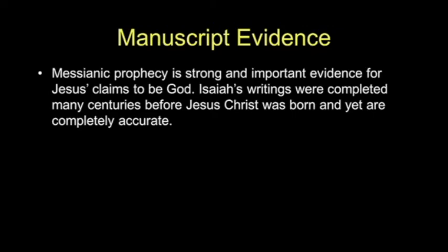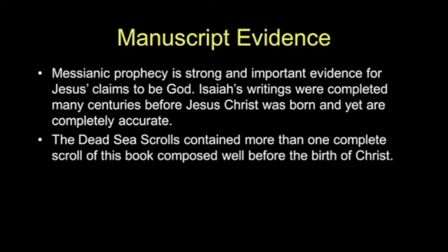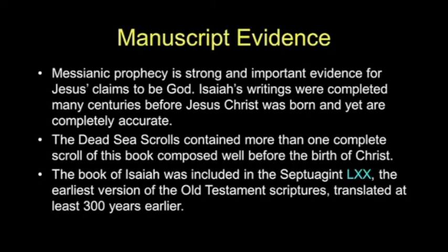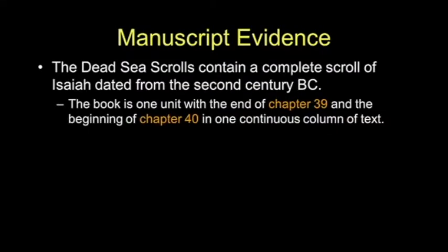The manuscript evidence gives important evidence for Jesus' claims to God. Isaiah's writings were completed many centuries before Christ was born, and yet they are completely accurate about His birth. The Dead Sea Scrolls contain more than one complete scroll of this book, well before the birth of Christ. That was included in the Septuagint translation — the earliest version of Old Testament scriptures until the Dead Sea Scrolls, translated about 300 years before Christ's ministry. Isaiah is presented in the Septuagint as a single book, not as a split book. The Dead Sea Scrolls contain a complete scroll of Isaiah dated from the 2nd century BC, and it's a single unit — chapter 39 and the beginning of chapter 40 are one continuous column of text.